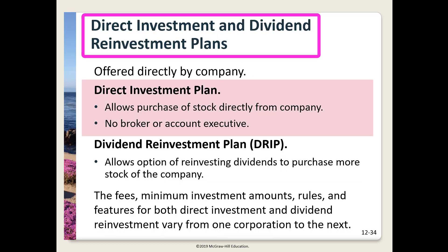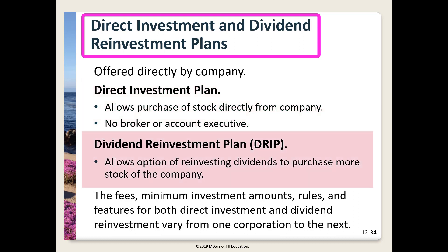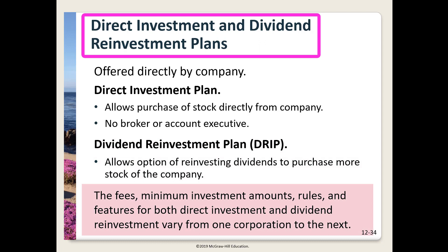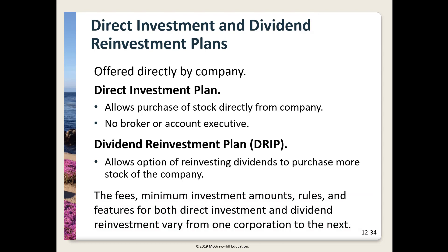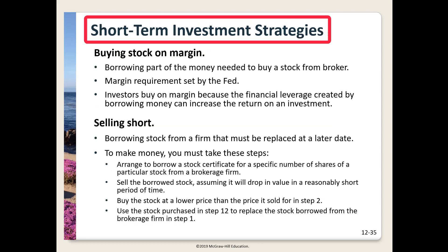Some firms allow direct investment — buying stock directly from the firm without a broker. Dividend reinvestment plans (DRIPs) are offered by most major companies, allowing you to elect to reinvest your dividends in more stock of the firm. The advantages are that fees are typically lower and stock is frequently offered at a better-than-market price.